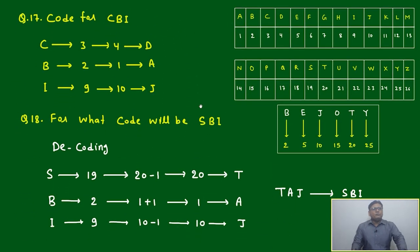Now we'll come to question 17: code for CBI. C's number is 3, it is odd. It is odd, means based on this logic we have to add 1, it will come to 4, it will become D. B is 2, it is even, it will reduce by 1, decrease by 1, it will become A. I is 9, it is an odd number, it will increase by 1, it will become J. Means CBI will be represented as D-A-J.